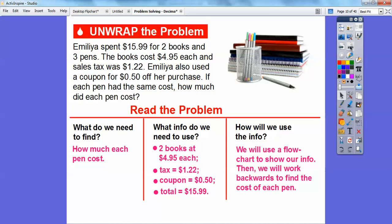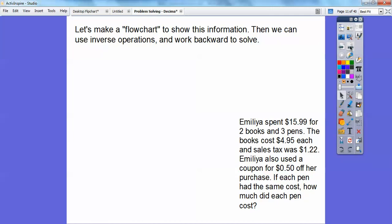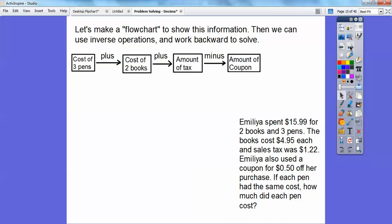Okay, so how are we going to use this? Well, we'll try it with a flowchart. I'll show you what that is to show the information. So it just displays how we did this, and then we'll work backwards with that flowchart to find the cost of each pen. Okay, so let's make a flowchart to show the information, and then we'll use inverse operations and work backwards to solve the problem. So here's the problem right here.